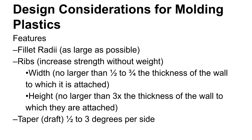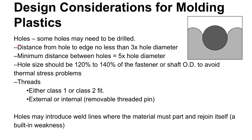For draft angles, one-half to three degrees per side is typical. If you have a very slick, mirror-finish surface you can get away with less draft angle. If you start to have texture on the surface, you really have to have more and more draft angle — the more texture you have, the more draft you need.